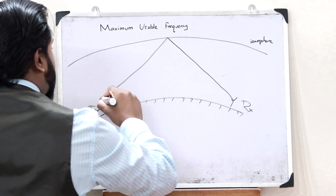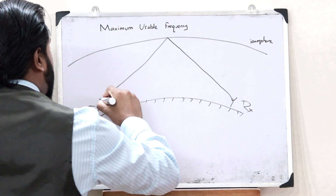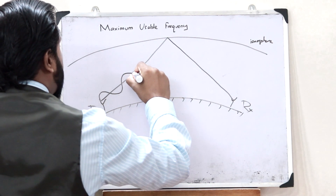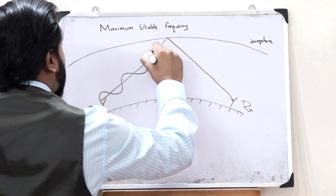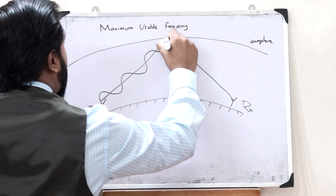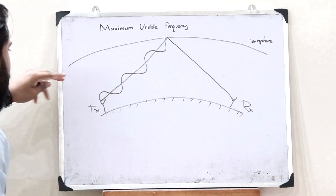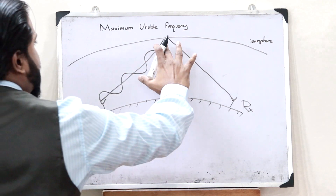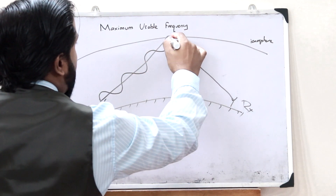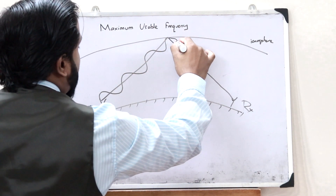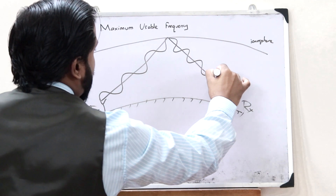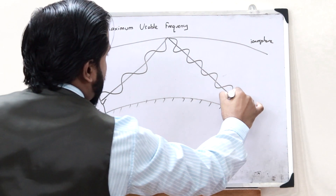The signal is sent with a particular frequency, and it is with this frequency that when it strikes the ionosphere it gets reflected back onto the receiver.